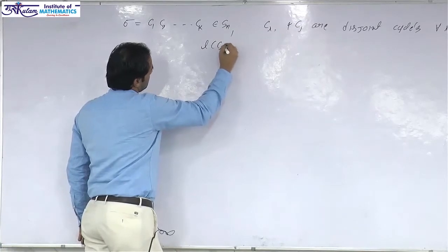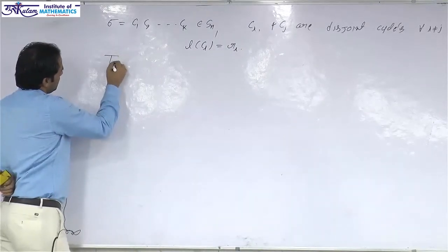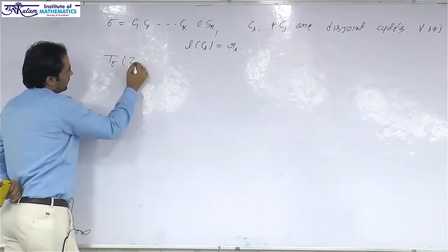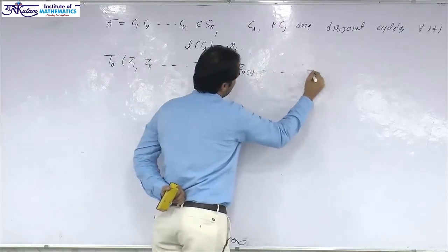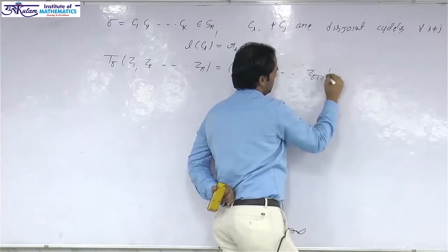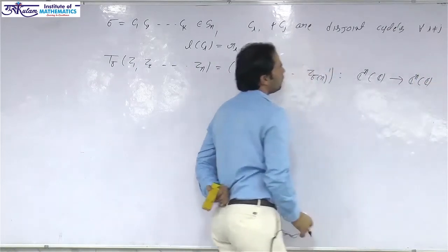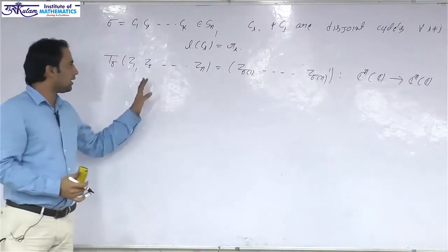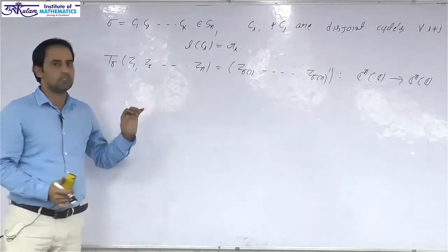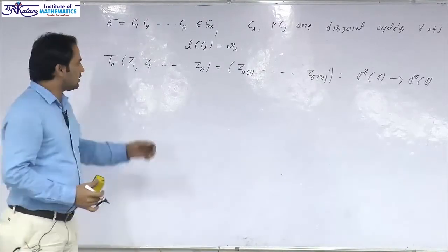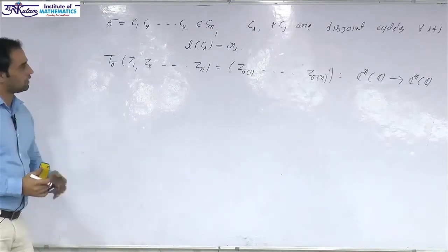Assume that the length of each cycle cᵢ is rᵢ. The permutation operator T_σ is defined as T_σ(z₁, z₂, ..., zₙ) = (z_{σ(1)}, ..., z_{σ(n)}), mapping ℂⁿ to ℂⁿ. We want to find the characteristic polynomial, the eigenvalues, the algebraic and geometric multiplicity of each eigenvalue, and whether this operator is diagonalizable.